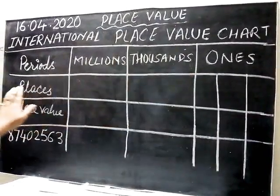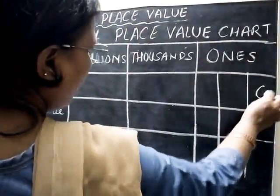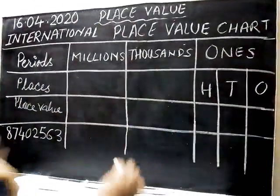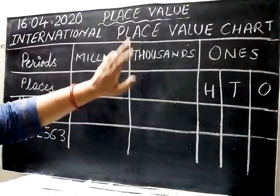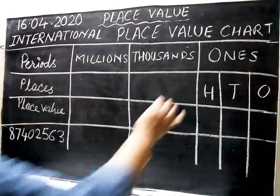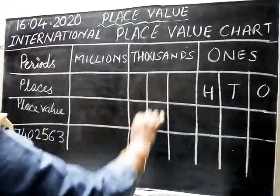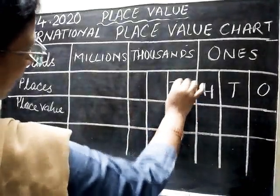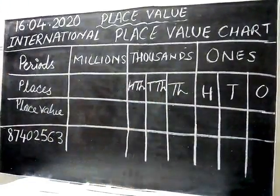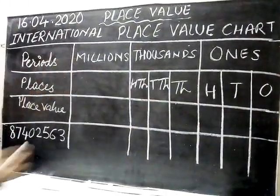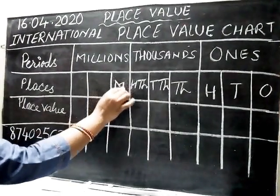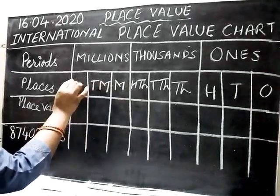The ones period has three places: ones, tens, hundreds — same as the Indian place value chart. The thousands period has a little change. In the Indian system we have only thousands and ten thousands, whereas in international this period also has three places: thousands, ten thousands, and hundred thousands. The millions period also has three places: million, ten million, and hundred million.